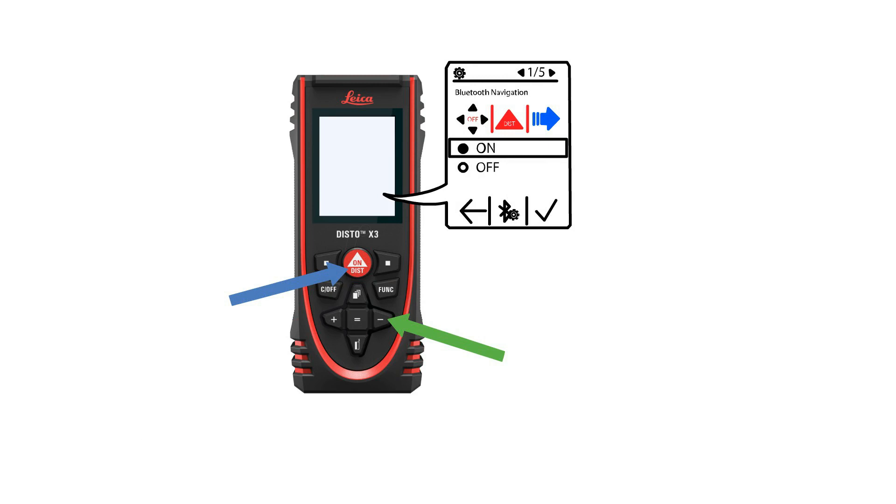You will now see the Bluetooth navigation screen. You want this to be set to the ON selection, and then you will press the right selection button, which is the checkmark.